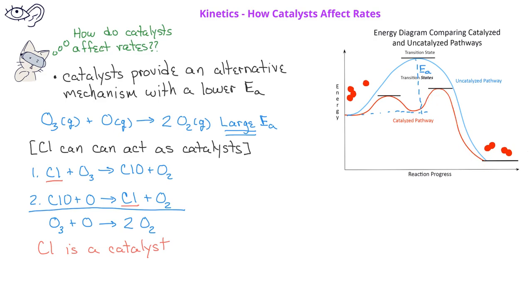This is a two-step process where the first step, the rate-determining step, has a much smaller activation energy and therefore is a much faster reaction that ends up breaking down the ozone in the atmosphere.